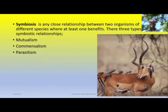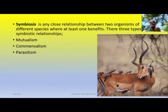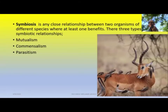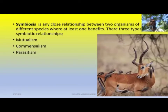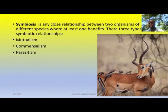So what is symbiosis? Symbiosis is any close relationship between two organisms of different species where at least one benefits. In any symbiotic relationship, at least one organism benefits from the relationship. There are times when both benefit, but at least one will benefit.